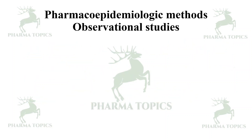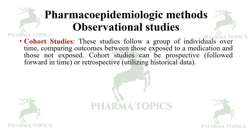The first method is observational studies. One key tool is cohort studies — a separate video is also available for cohort studies. These studies follow a group of individuals over a particular period of time, comparing outcomes between those exposed to a medication and those not exposed. Cohort studies can be prospective — followed forward in time — or retrospective, utilizing historical data from medical records.